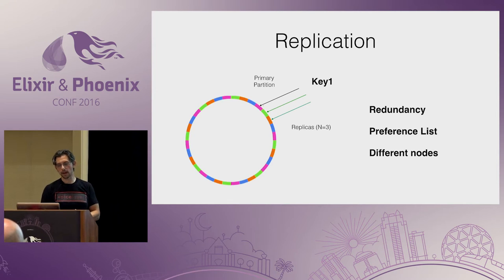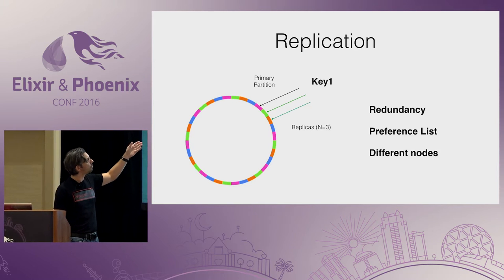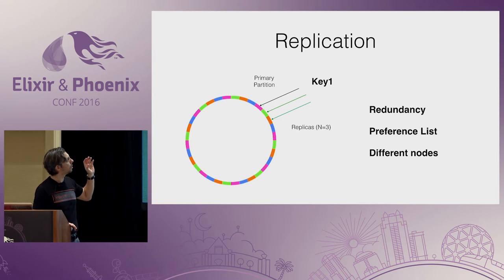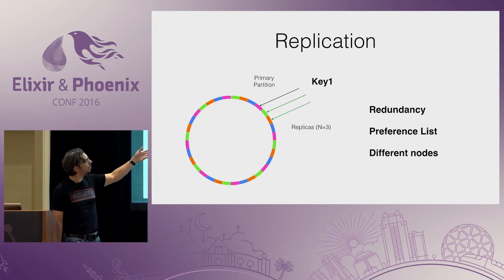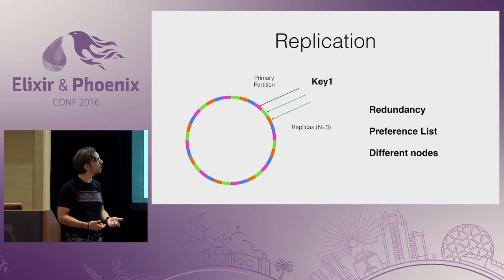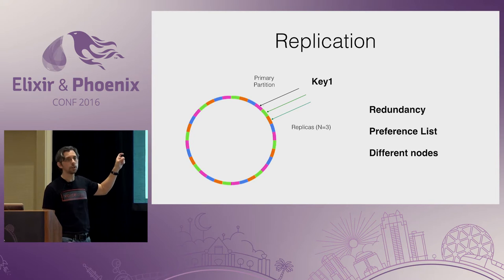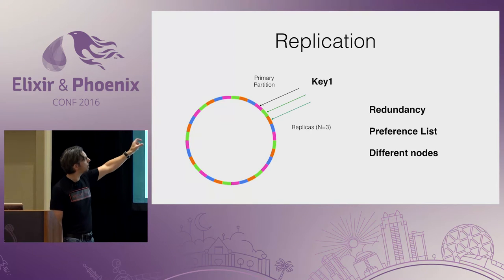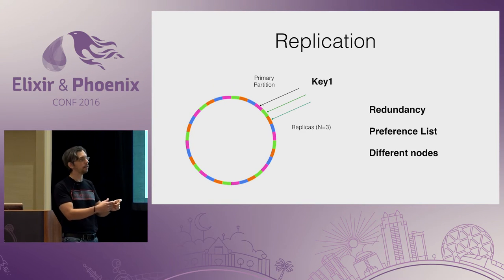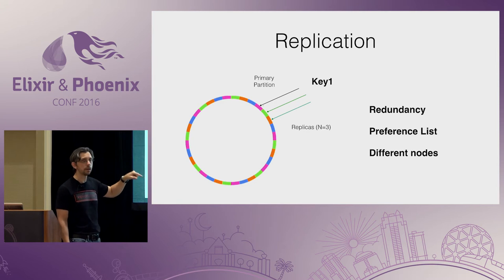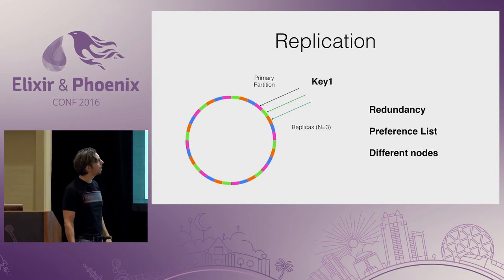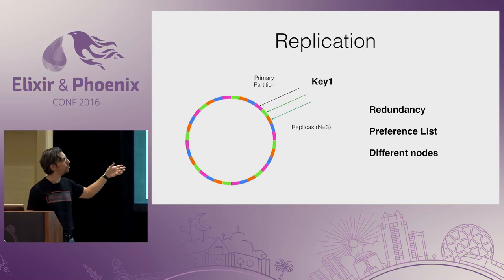Another concept is replication. If we handle a value or key only on a single partition and that partition goes down, we will lose the data. If we have a replication factor of N equals three, that means we choose three different partitions to store that data, and we want these partitions to be on different nodes — different colors. If two partitions belong to the same node, you keep going clockwise in the ring and choose a different node. This is called a preference list, and we're going to use this concept later.